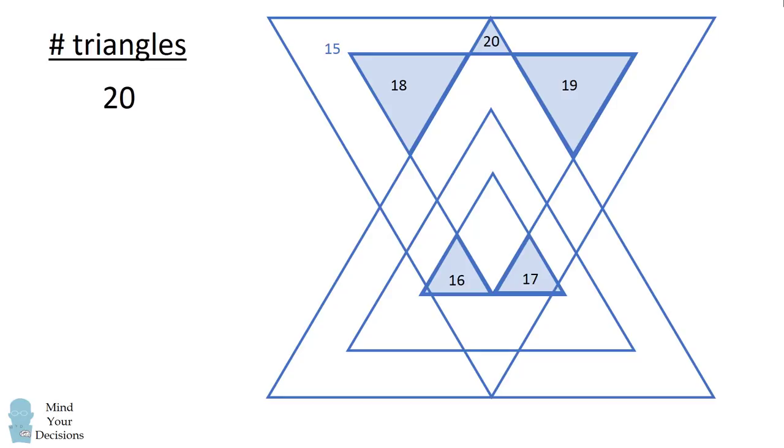So, we're up to 20, and now we have one more upside down triangle. This adds one more to get to 21.